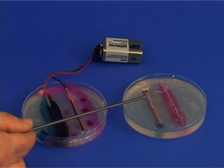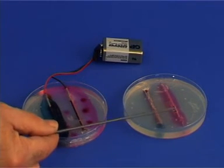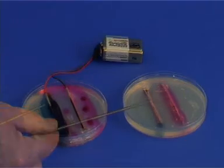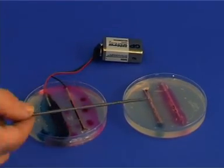The nail on which the magnesium strip was attached develops only a pink color, while on the other nail both blue and pink colors can be observed.